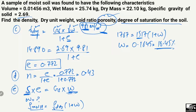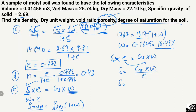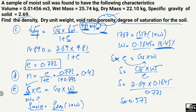Now we can find the degree of saturation. From S times e equals G_s times w, rearranging: S equals (G_s times w) divided by e. So S equals 2.69 times 0.1645 divided by 0.772. S comes out to be 0.573, or multiplying by 100, the degree of saturation is 57.3%.